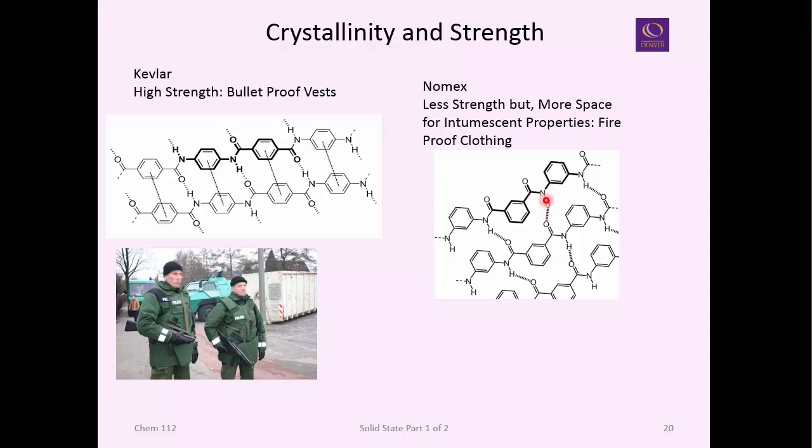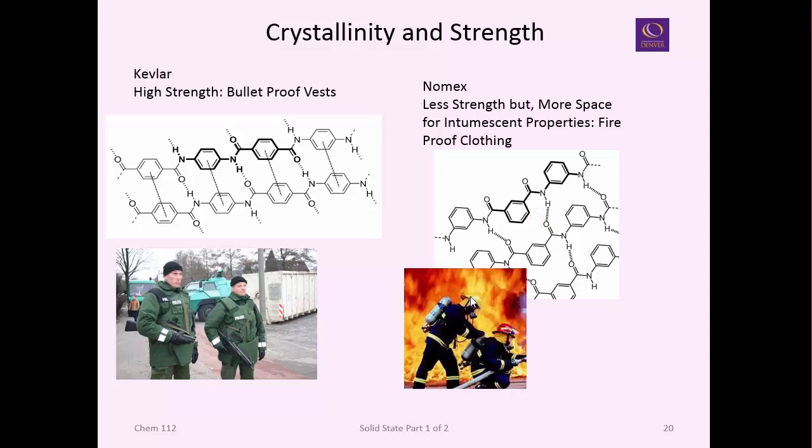Now if I connect it one carbon over in the meta configuration, see how it looks like an upside down M. Now the crystallinity is affected because of tension on this hydrogen bond. It opens this up and makes little air pockets. So the strength goes down. This is the structure of Nomex, which is not as strong as Kevlar. These open pockets are useful for managing heat, and this material is what you put in fireproof clothing.